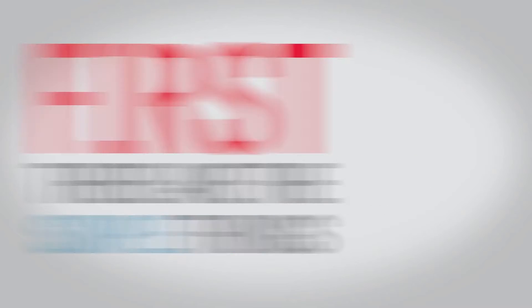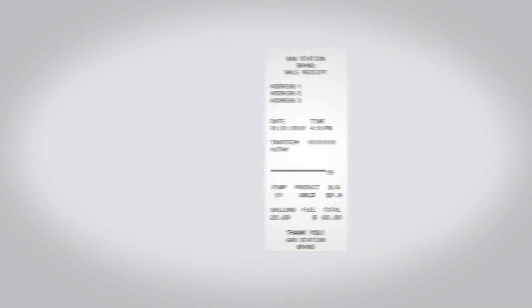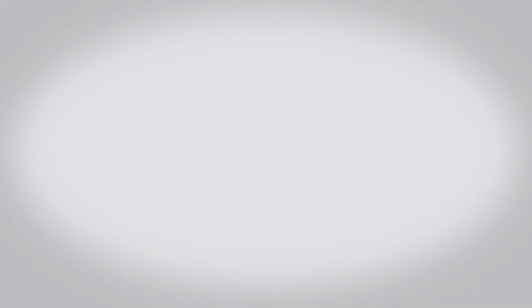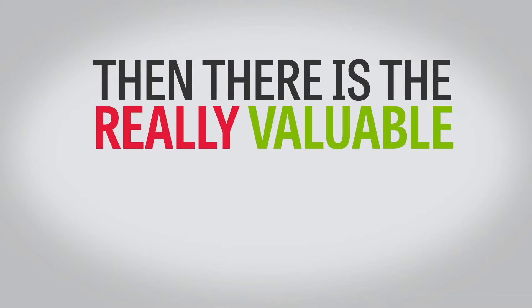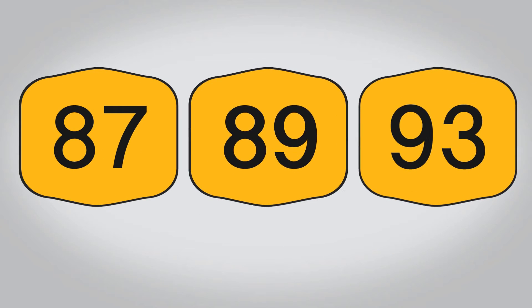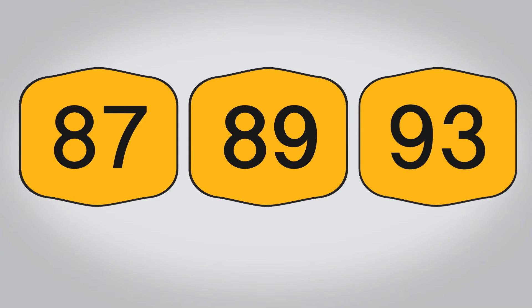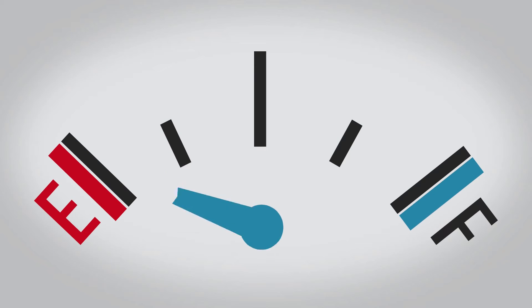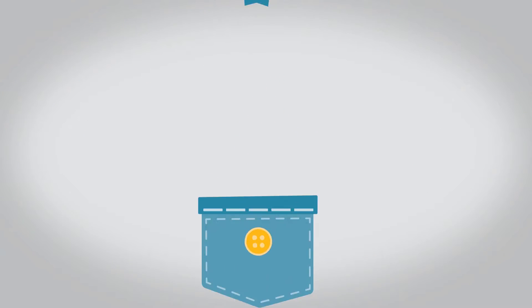First, there are the simple things — how much, when, where, who kinds of questions. Then there is the really valuable content: the insights that allow fleets to lower costs. Bad driver behavior, like poor data entry. Expensive behavior, like purchasing unnecessary fuel grades. Or illegal behavior, like fraud.